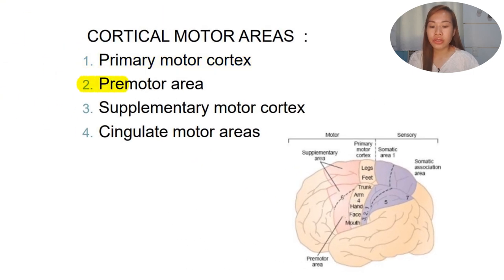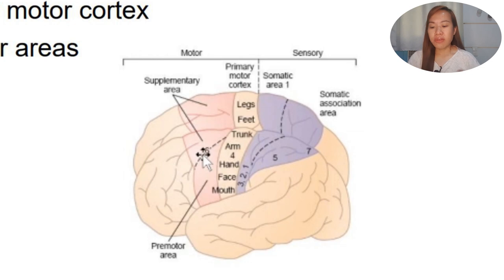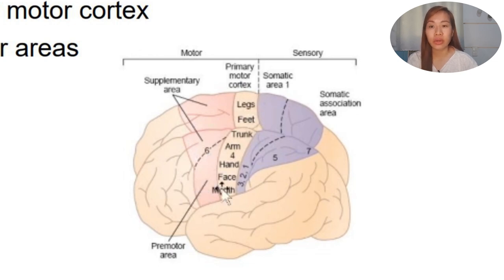Another area is the premotor area, located on the pink-colored portion. When we say 'pre,' it means before - so before movement. The premotor area generates a movement plan that is then transferred to the primary motor cortex for execution. The premotor area creates the movement plan, and after that it transfers to the primary motor cortex, which then executes the movement.